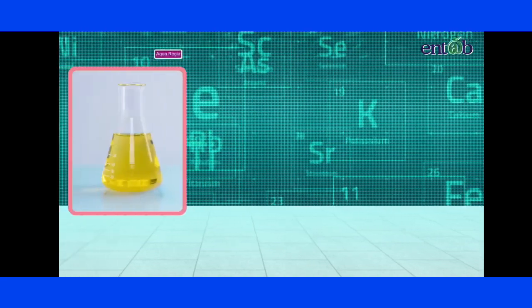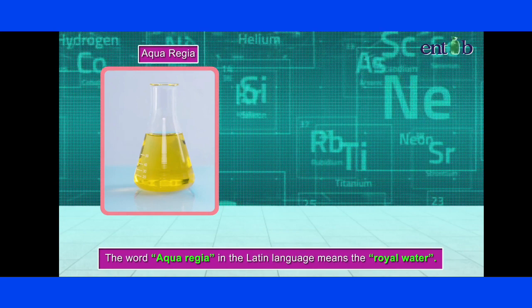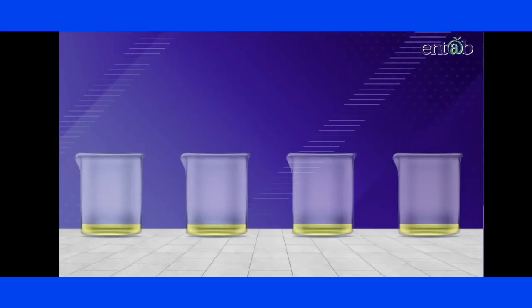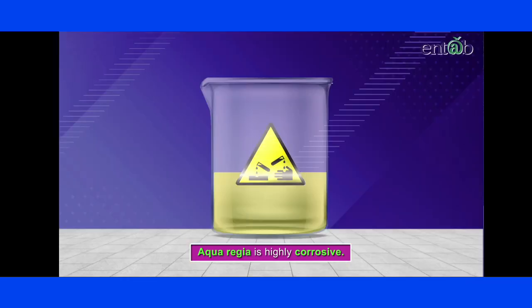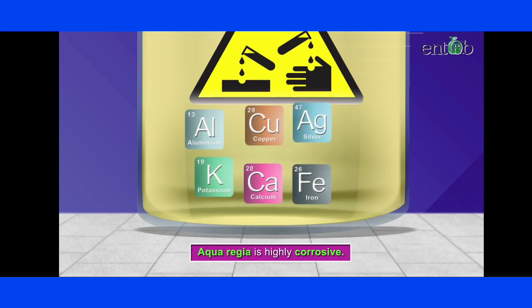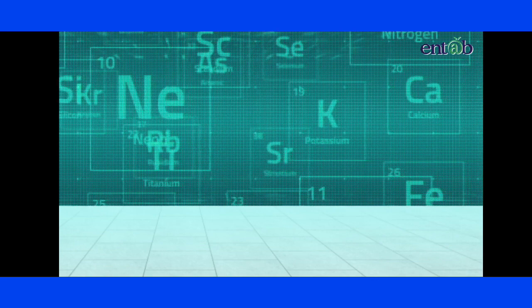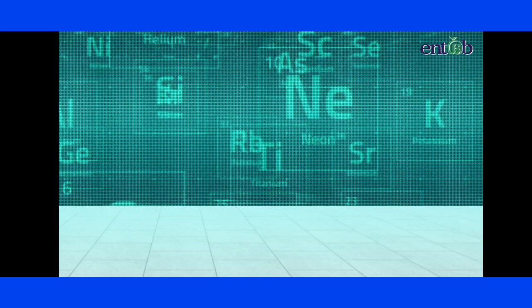Before we end this module, we must learn about Aqua Regia. This word means 'royal water' in Latin and is a freshly prepared solution of one part of concentrated nitric acid and three parts of concentrated hydrochloric acid. It is a highly corrosive liquid which can dissolve all metals, even gold and platinum. We shall learn about how metals and non-metals react with salt solutions in the next module.